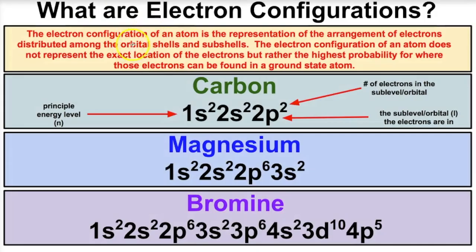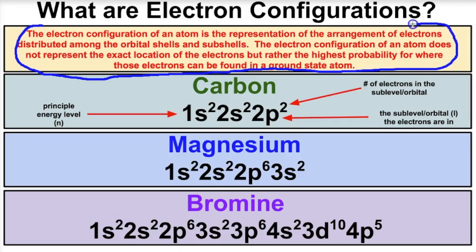So what are electron configurations and how do they work? The electron configuration of an atom is the representation of the arrangement of electrons distributed among the orbital shells and subshells. Basically, an electron configuration gives us the highest probability for where those electrons are going to be in the different energy levels, subshells, and orbitals in an atom.